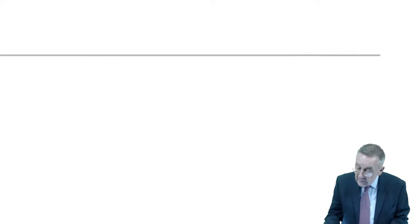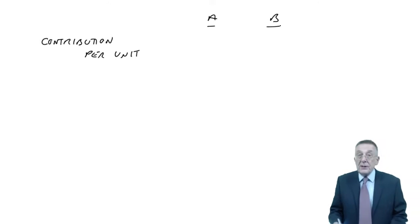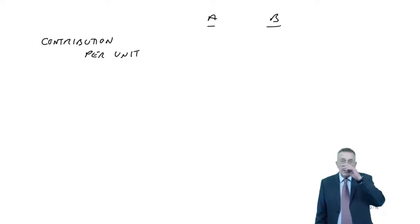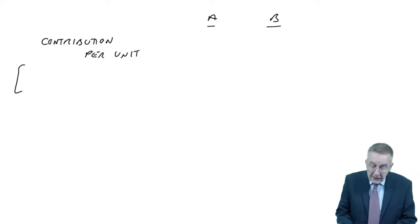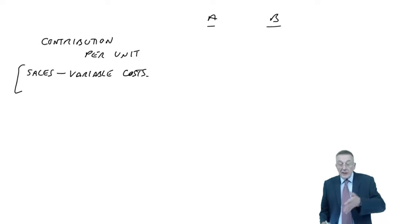So before we start doing anything, we don't look at the profit per unit, we look at the contribution. Now contribution is a term you should be aware of, but to make sure because it can occur in lots of places in later chapters. The contribution per unit is, it can be expressed in two ways. They both mean the same. It's either the sales minus the variable costs.